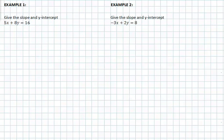In example one, we're asked to give the slope and y-intercept of 5x plus 8y equals 16. First, we need to isolate y as we said earlier.